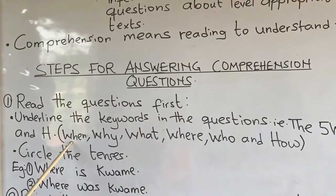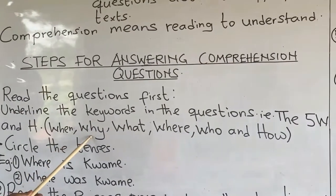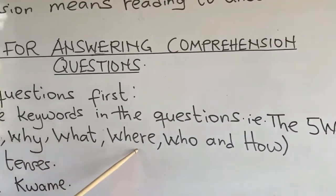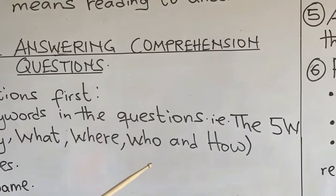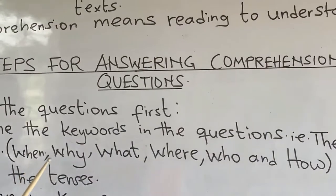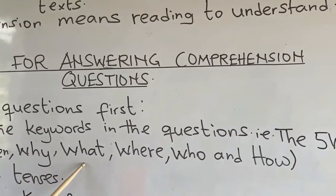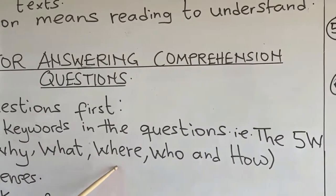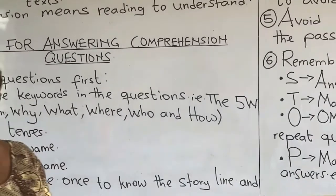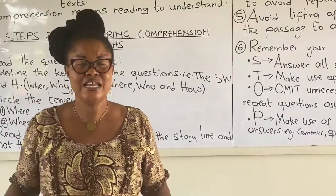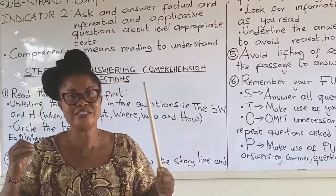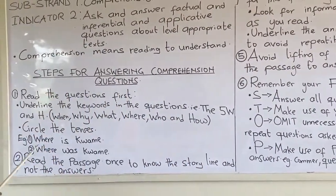The five W's and H are: when, why, what, where, who, and how. These key words are mostly seen in our comprehension questions.